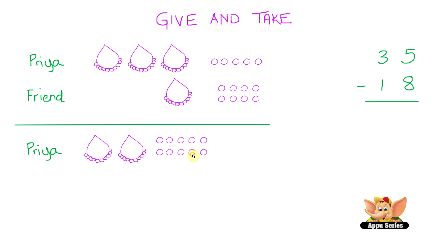We can open out 1 necklace. So what we're left with will be 2 necklaces, 10 loose pearls. Plus the 5 that Priya already has, which makes it 15 loose pearls. We can now give away 8 from 15. So let's scratch out 8 here.